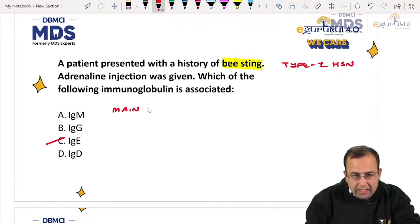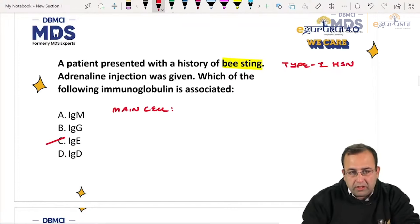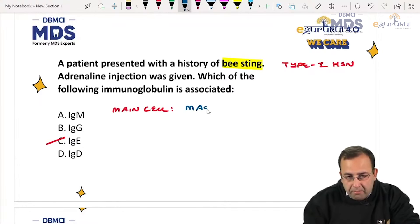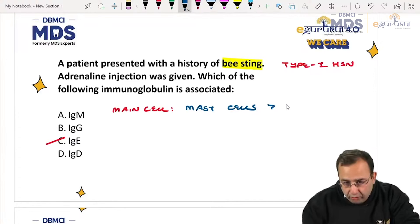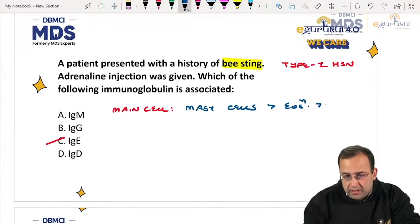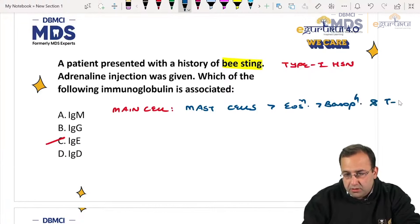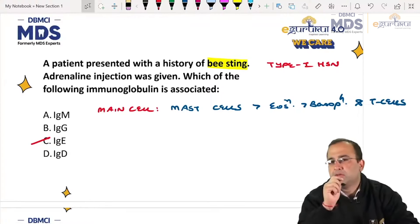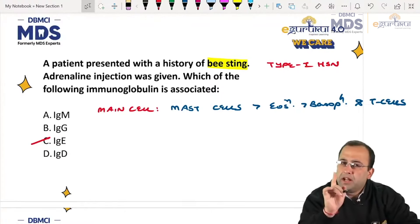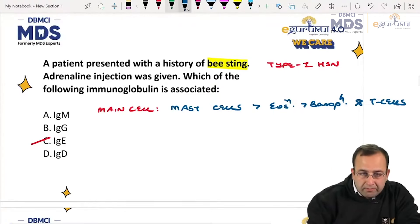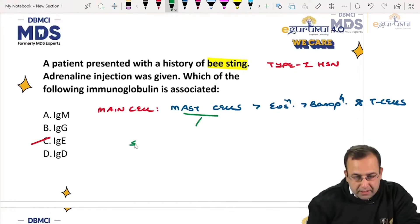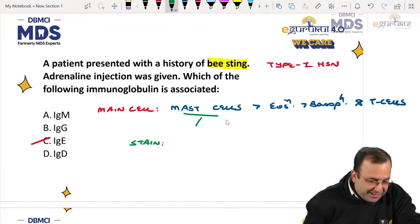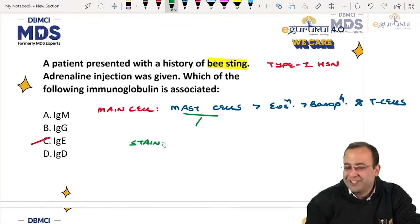The main cell responsible for type one hypersensitivity is mast cells, followed by eosinophils, basophils, and T-cells. If mast cell, eosinophil, and basophil are not given in the question, the cell responsible for type one hypersensitivity is T-cells. Stain used for mast cells: toluidene blue.